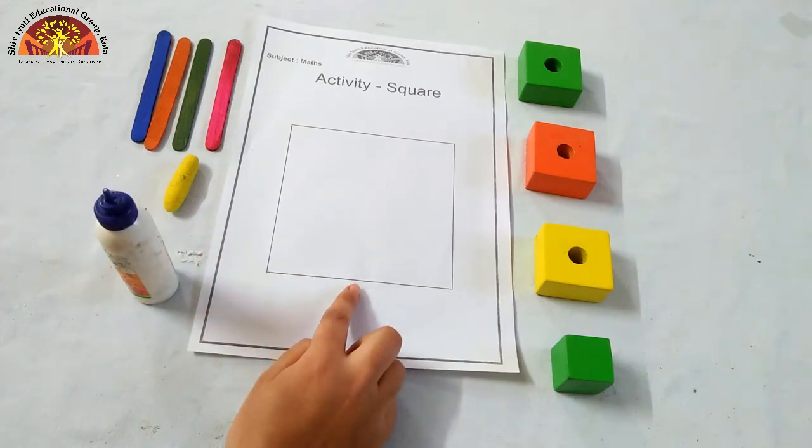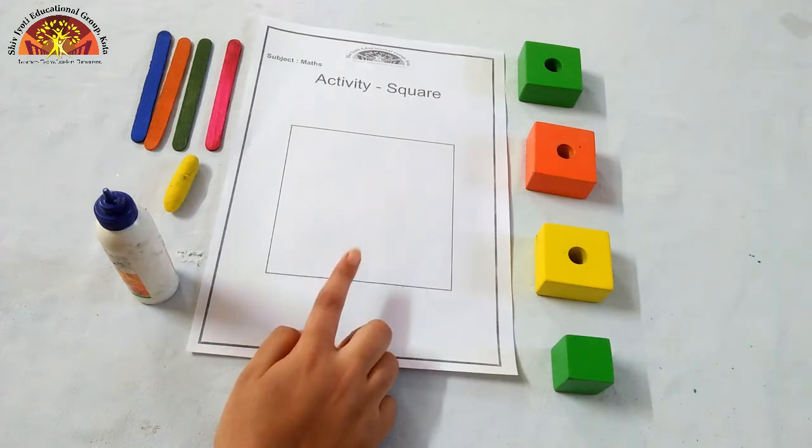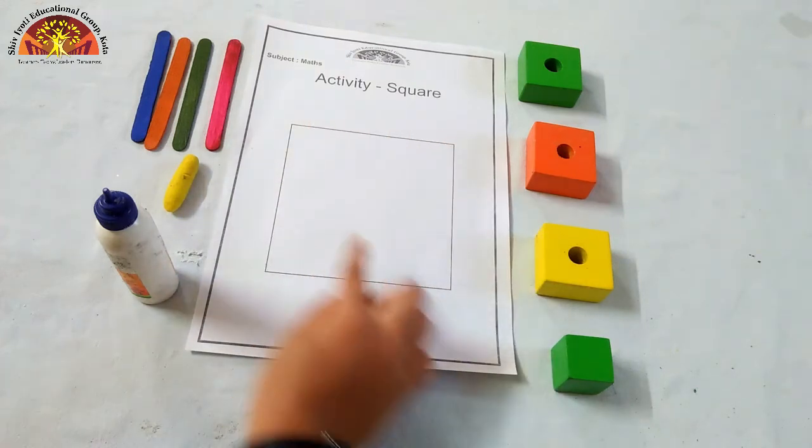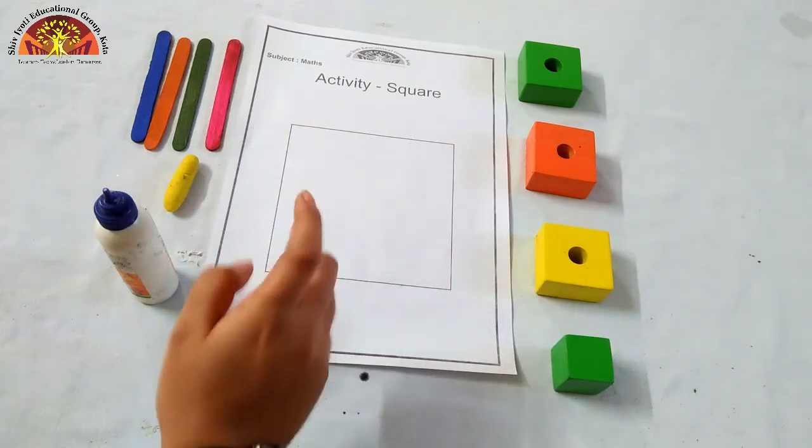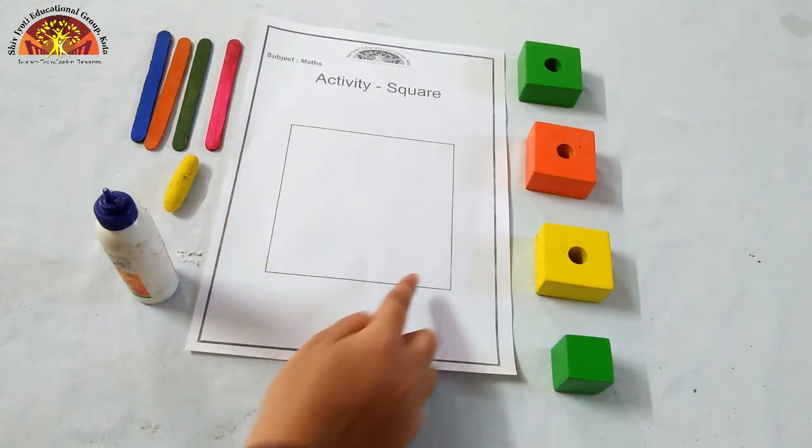Tell me kids, which shape is this? This is square. It has four equal sides. One, two, three, four and four corners. One, two, three, four.